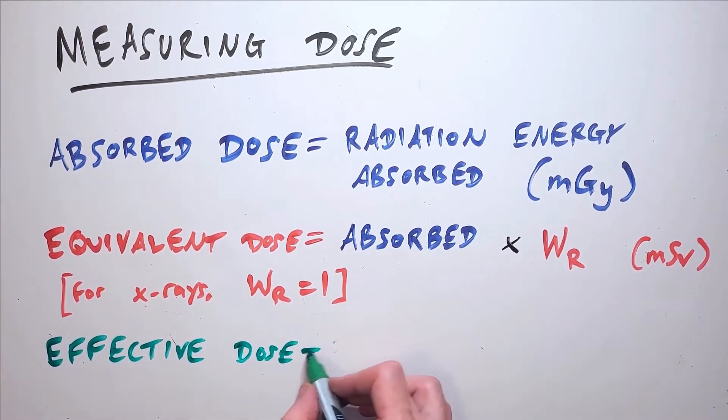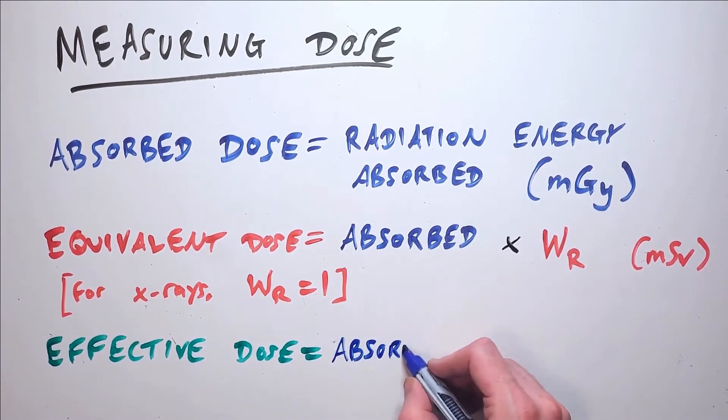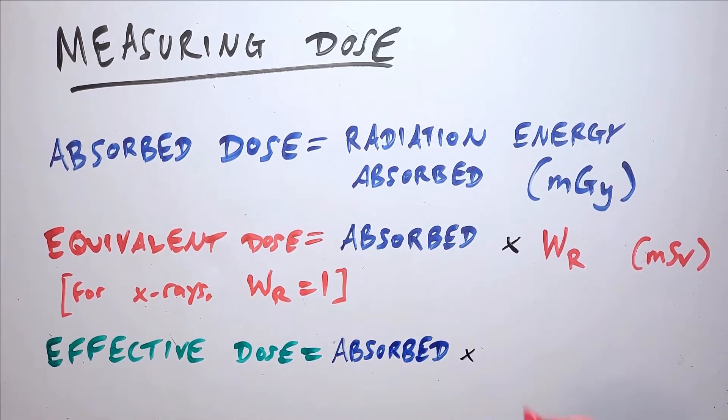Effective dose takes into account both the radiation type and the tissue type being irradiated. This means it's the equivalent dose multiplied by the tissue weighting factor, which varies depending on the relative radiosensitivity of the tissue type being irradiated.